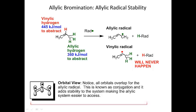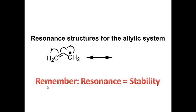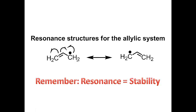Let's think about it in terms of resonance. Here's the allylic radical, and here are my arrows showing the resonance. I'm going to shift the pi bond and put the radical on this carbon — this is what the resonance form looks like. These two resonance forms are interchangeable. The more resonance forms I'm able to make, the more stable that particular radical is going to be. Remember: resonance equals stability.